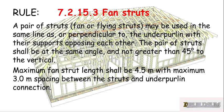Clause 7.2.15.3 covers fan struts. A pair of fan or flying struts may be used in the same line as or perpendicular to the underperlin, with their supports opposing each other. The pair of fan struts shall be at the same angle, not greater than 45 degrees to the vertical. Maximum fan strut length shall be 4.5m, with a maximum 3m spacing between the struts and the underperlin connections.